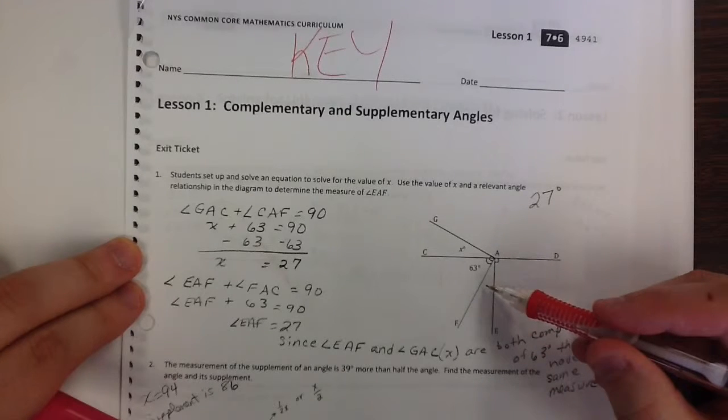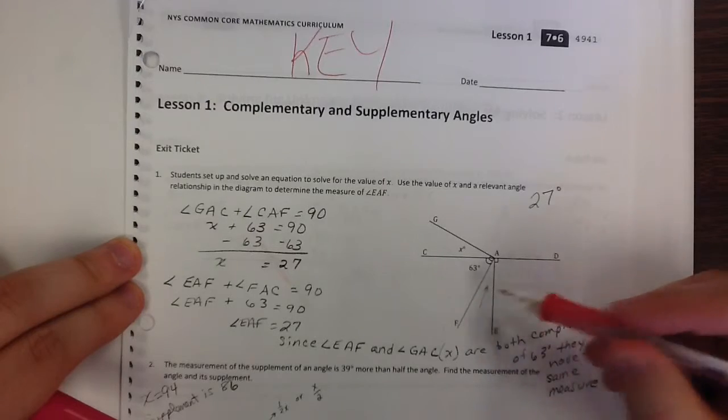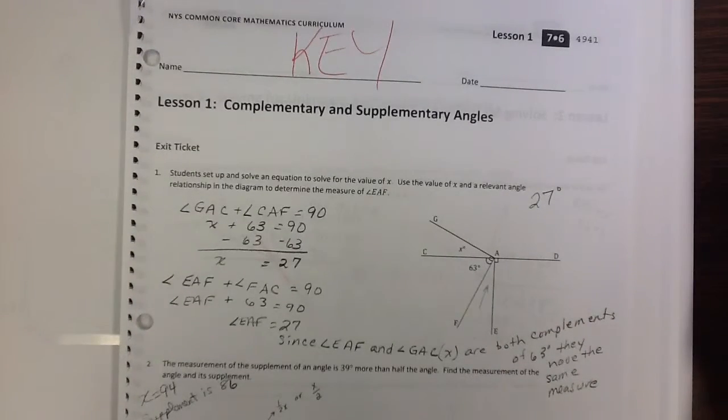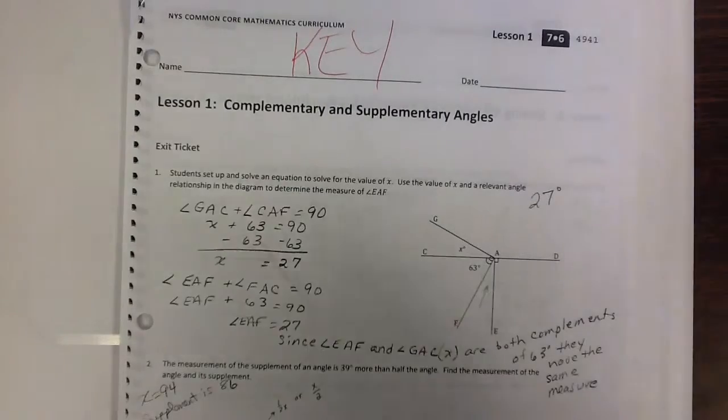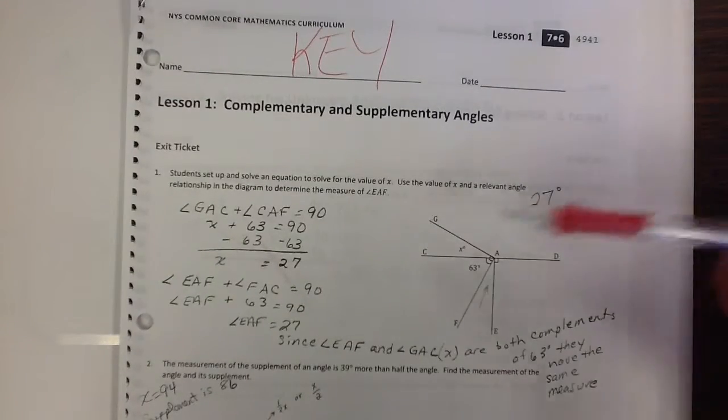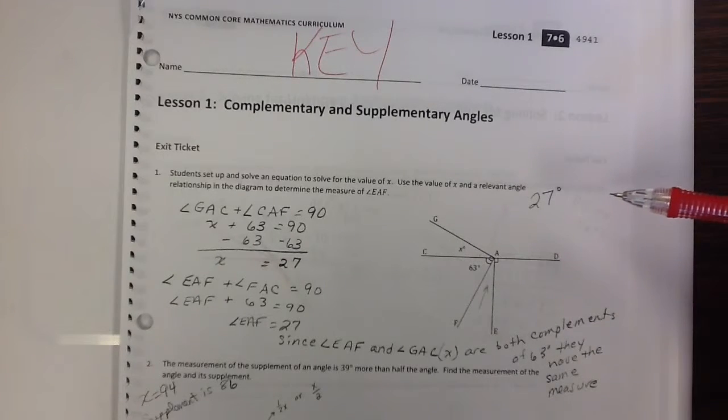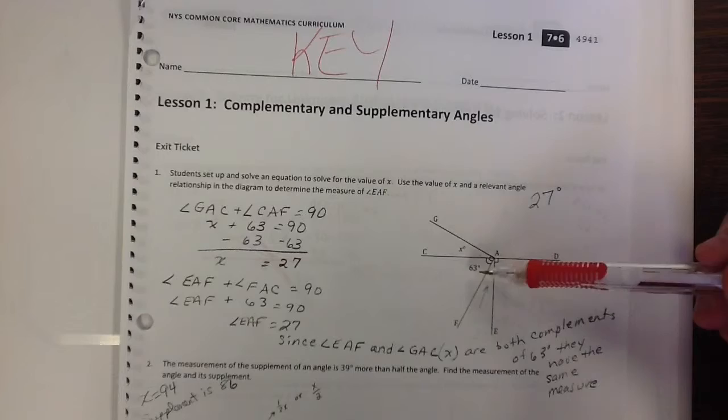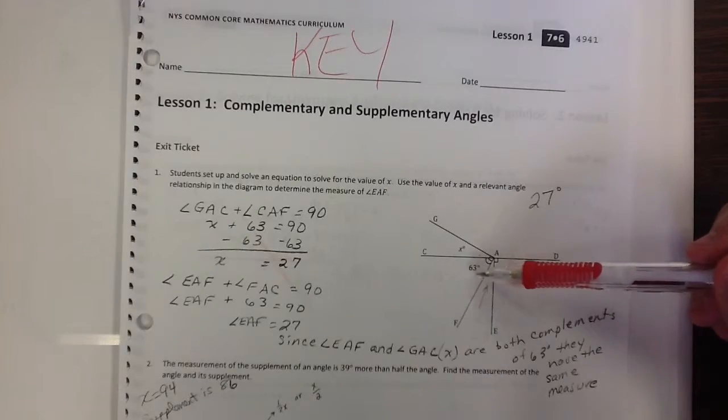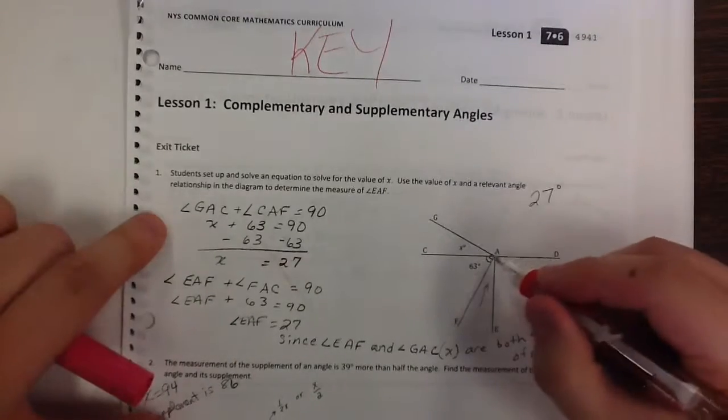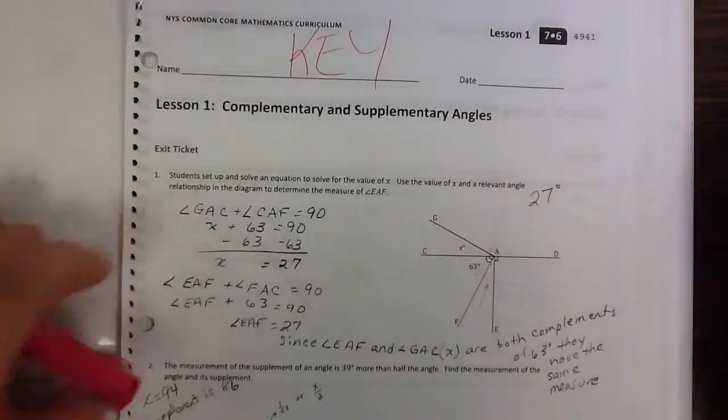So you need to, we need to be able to tell what this angle measure is, okay? So what we can say is that if we add GAC, which is this angle, plus angle CAF, which is this angle, okay, those two angles together we see is a 90 degree angle, right? So if we kind of turn it this way, we're talking about this angle.